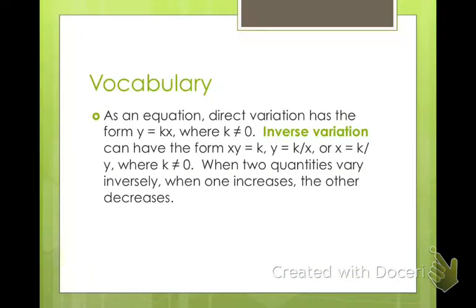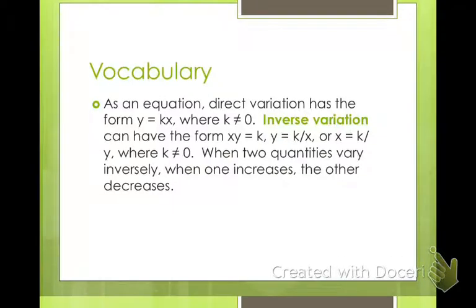Alright, for our vocab, an equation that's a direct variation has the form y equals kx, which we learned about in chapter 2 at the beginning of the year. An inverse variation is in the form xy equals k, or y equals k divided by x, or x equals k divided by y. Any of those three things, they all mean the same thing, so as x increases, y decreases, they're opposites. So that's inverse variation.